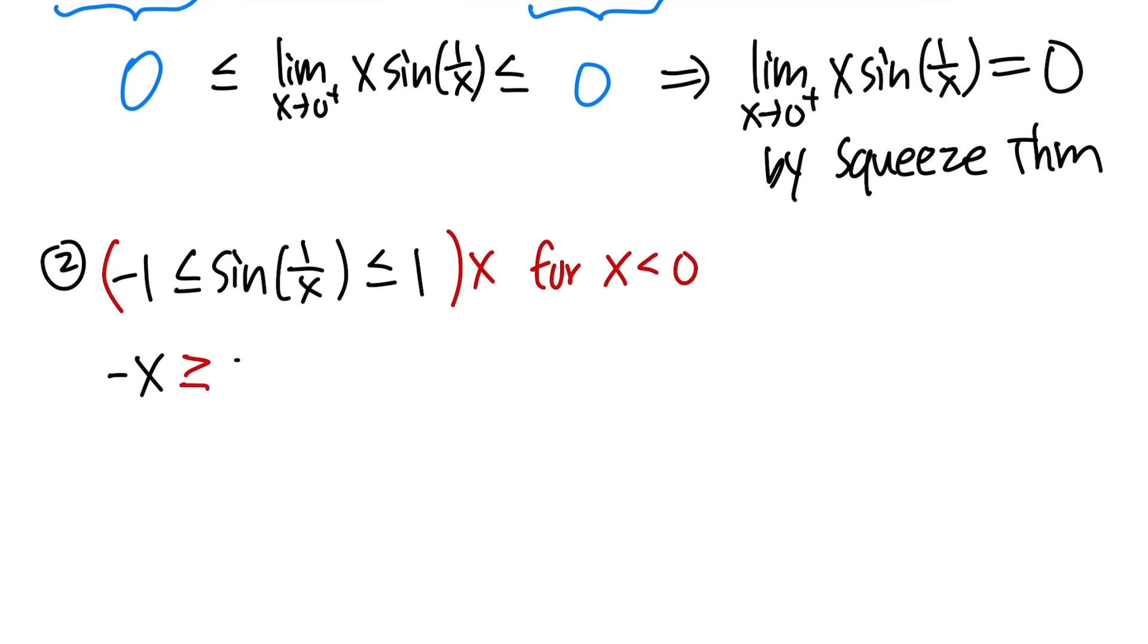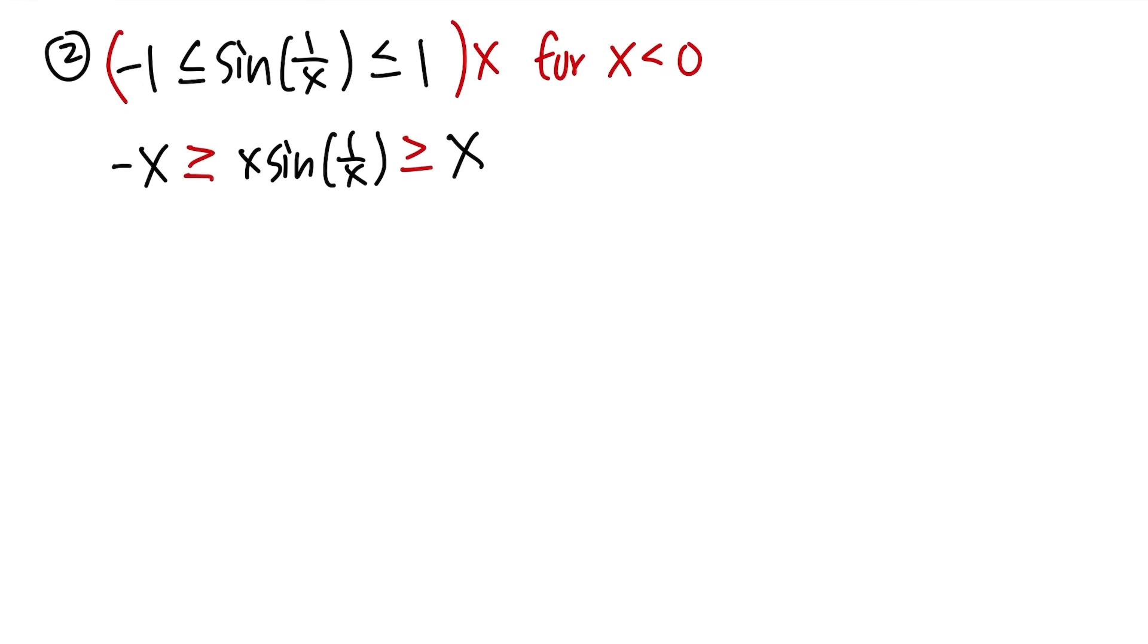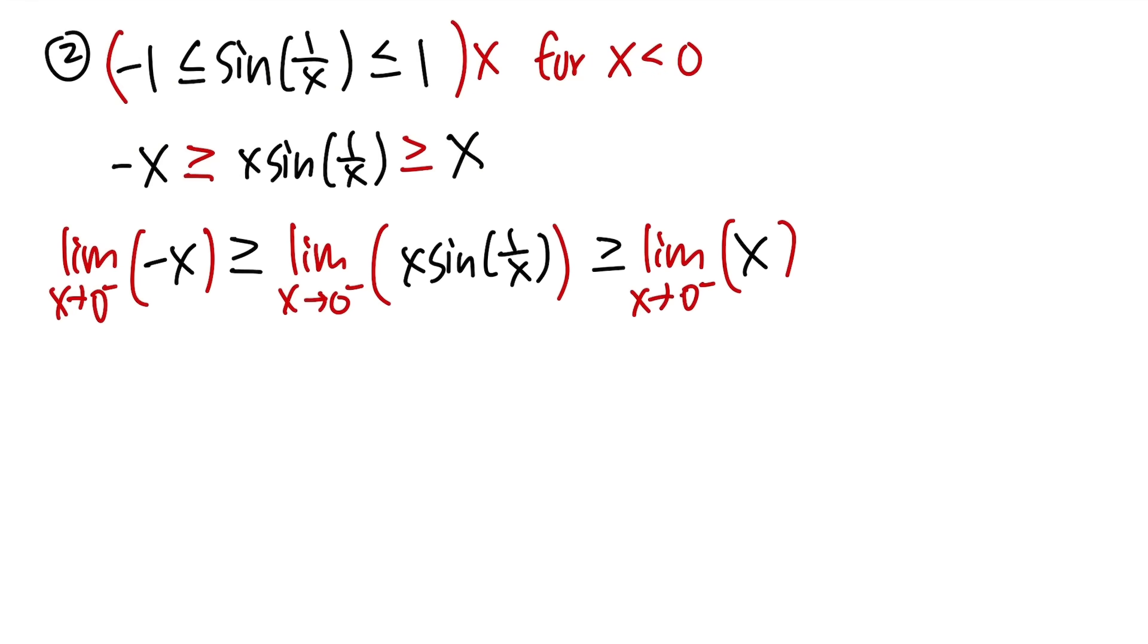And then we have x sine of 1 over x, and then flip the inequalities, right here, and then we have x. And then, we take the limit as x approaching 0 minus. Cool. Now, same thing.